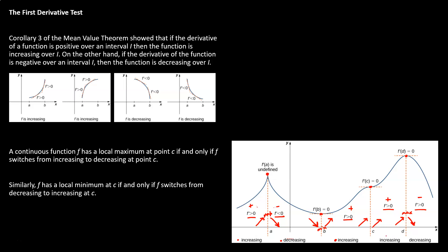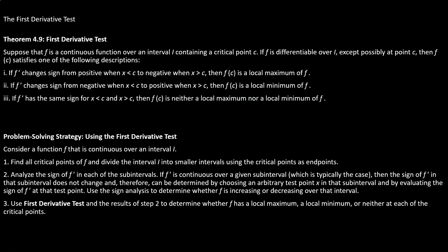This is the idea of the first derivative test: find critical points, calculate the derivative around them, and look at the increasing/decreasing signs to classify max and min. Theorem 4.9 summarizes this: if the derivative changes from positive to negative you're at a maximum; if it goes from negative to positive you're at a minimum; and if the derivative has the same sign on both sides — positive/positive or negative/negative — then you have neither a max nor a min.